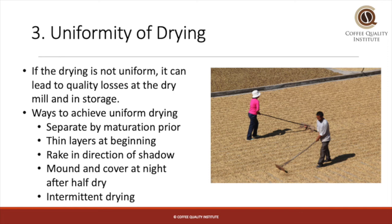On the other hand, coffee that is overdried is not only an immediate financial loss to the producer, who is paid by weight, but will also lead to more breakage at the dry mill and quality losses during storage. Some ways to increase uniformity in drying are to separate coffee by maturation prior to drying, as we discussed previously. Dry the coffee in thin layers, especially at the beginning of drying. When raking the coffee, rake in the direction of your shadow to ensure that the windrows align with the sun and thus receive uniform sunlight, as shown in the picture here.